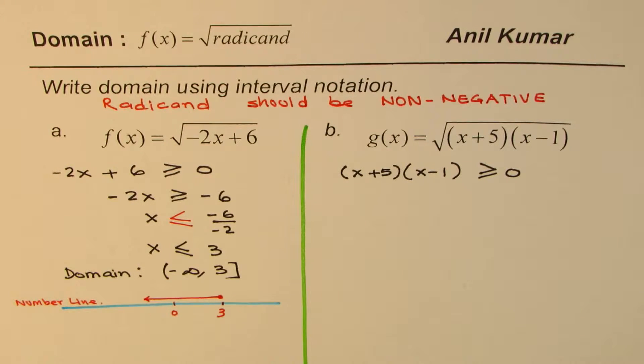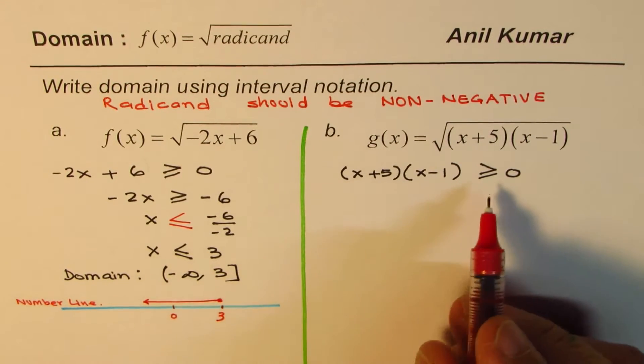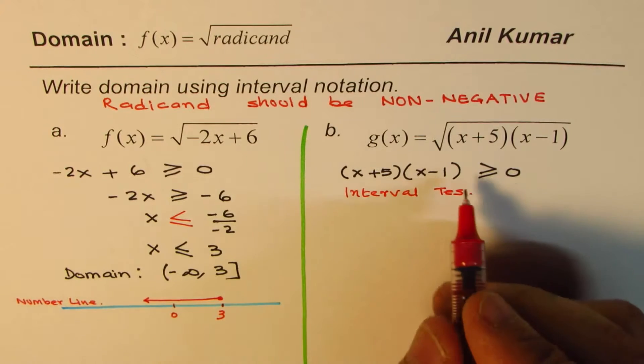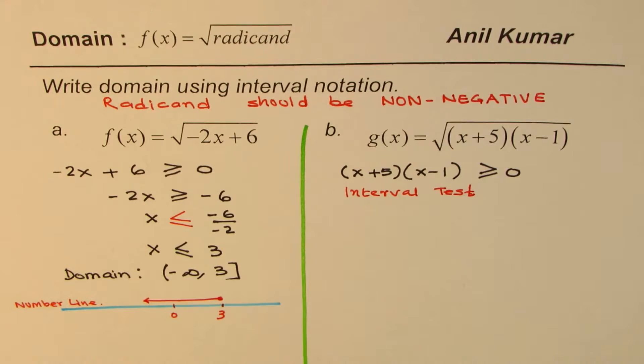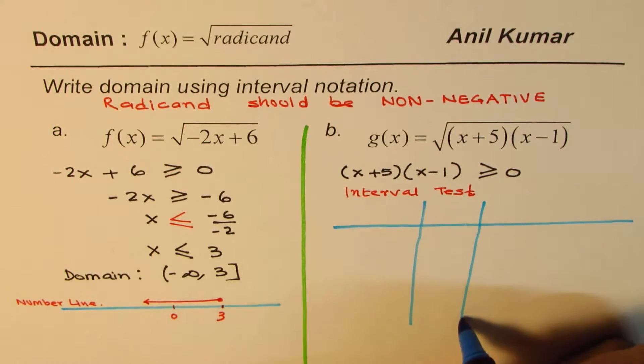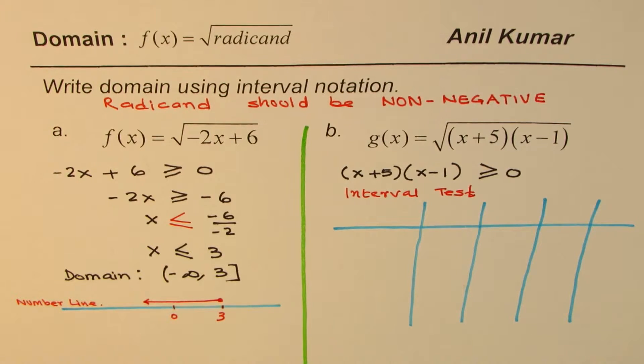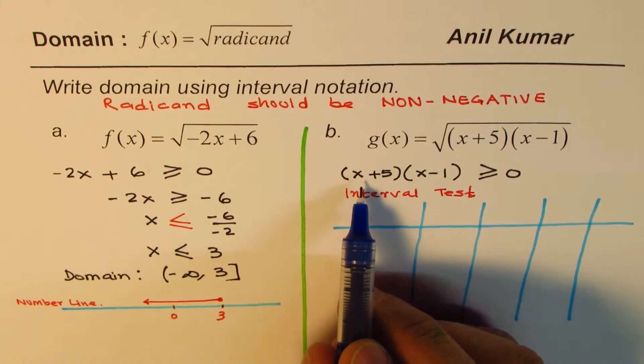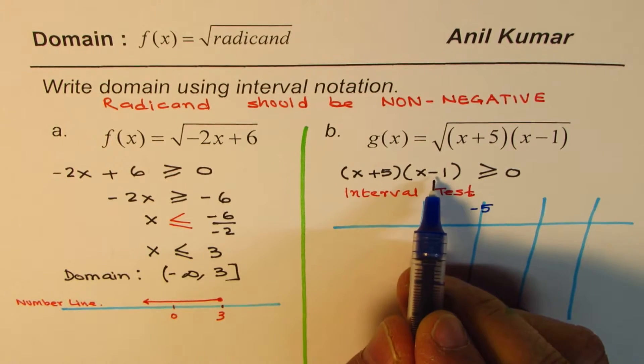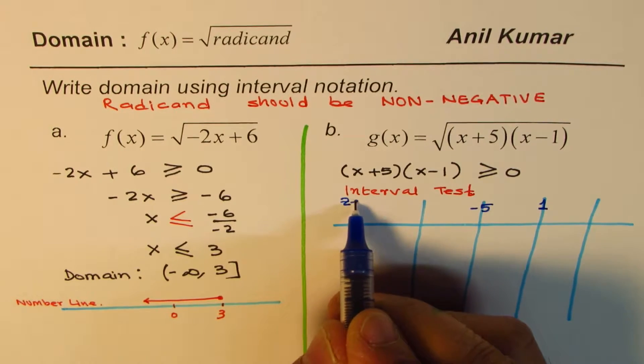Now let's get back to the second question. We have (x + 5)(x - 1) ≥ 0. To solve this inequality, we'll use interval test. These zeros divide your plane - if there are two zeros they will divide your plane in three parts. We have two zeros: one because of the factor x + 5, which is zero at -5, and x - 1 will become zero if I substitute 1 for x.